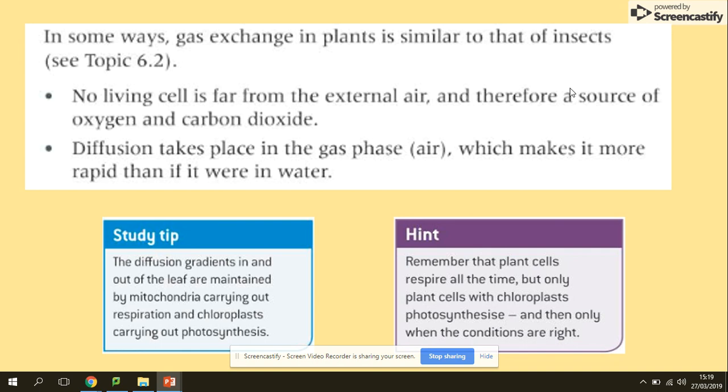In some ways, gas exchange can be similar in plants to what we experience in insects. Remember, in insects we had spiracles - in plants we've got stomata. We had the waxy cuticle in insects, we've got waxy cuticle in plants as well. But no living cell is far from external air, that's another thing. And diffusion takes place in the gas phase, in the air, which makes it more rapid than if it were in water.